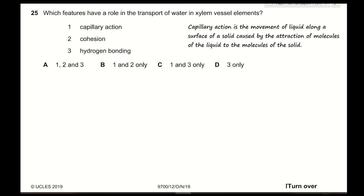Question 25: Which features have a role in the transport of water in xylem vessel elements? Capillary action — the movement of liquid along a surface caused by attraction of liquid molecules to solid molecules; the adhesion force is stronger than cohesion, pulling water upwards — correct. Cohesion — hydrogen bonds between water molecules pull each other up in a continuous column — correct. Hydrogen bonding — both adhesion and cohesion depend on hydrogen bonding — correct. The answer is A.